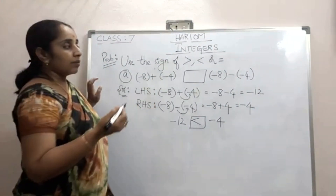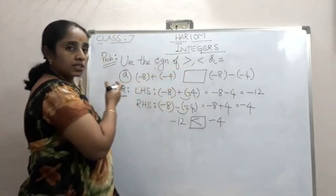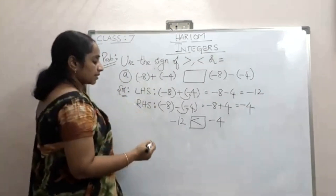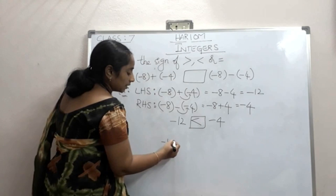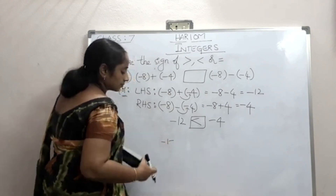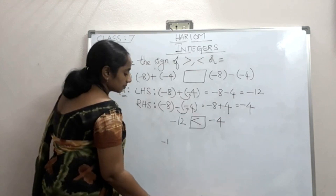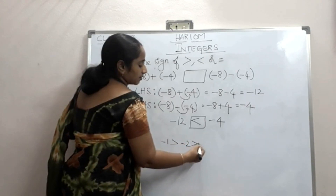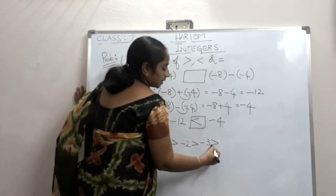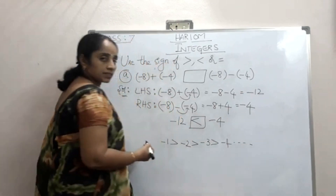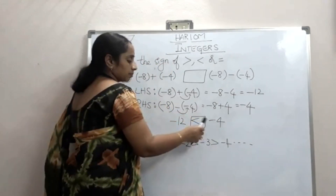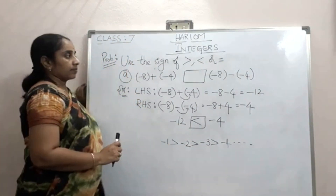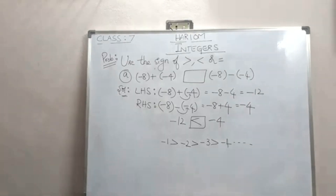So LHS is minus 12 and RHS is minus 4. Ignoring signs, 12 is greater than 4, but for negative integers it is the reverse — the further left of 0, the lesser the value. So minus 12 is less than minus 4. As discussed in the previous class: moving left of 0, values become lesser — minus 1 is greater than minus 2, minus 2 greater than minus 3, and so on. Therefore minus 12 is less than minus 4.